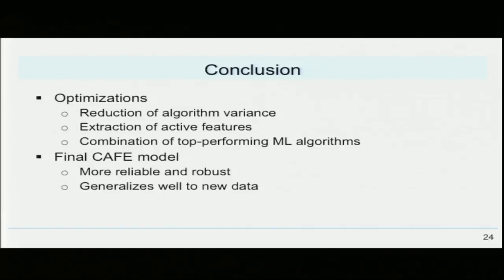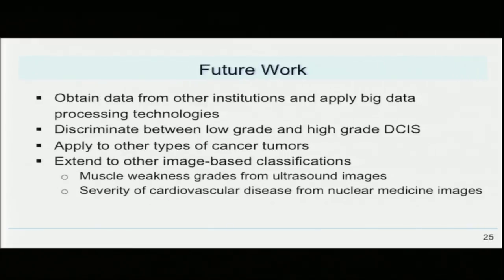In summary, we performed three novel machine learning optimizations: reduction of algorithm variance, extraction of active features, and combination of top performing machine learning algorithms, resulting in our final CAFE model, which we determined to be more reliable, robust, and to generalize well to new data. In the future, we would like to obtain data from other institutions and apply big data processing techniques to further confirm robustness and improve classification accuracy. We would also like to improve our classifier to discriminate between low-grade and high-grade DCIS, and apply it to other types of cancer tumors and other image-based classification problems, such as muscle weakness grade and severity of cardiovascular disease.